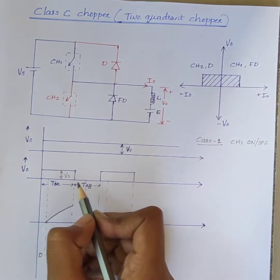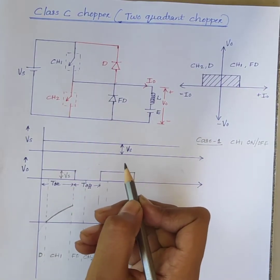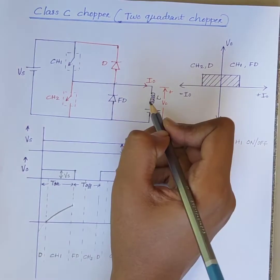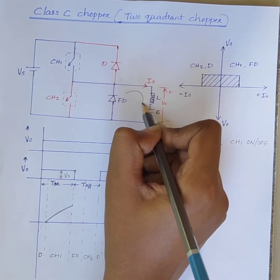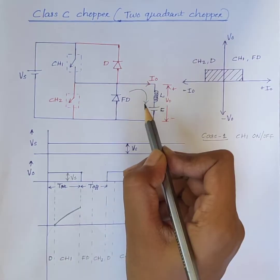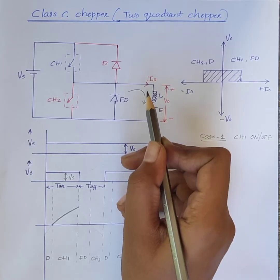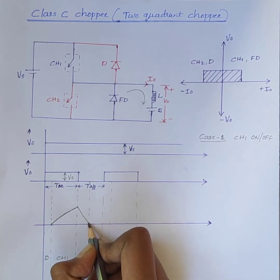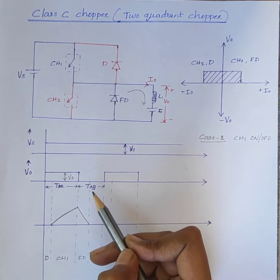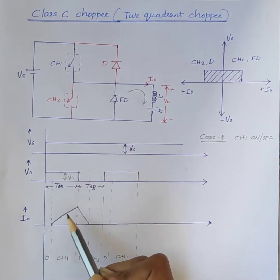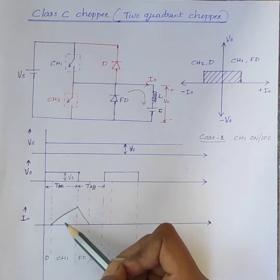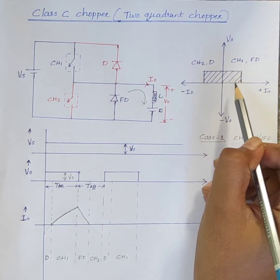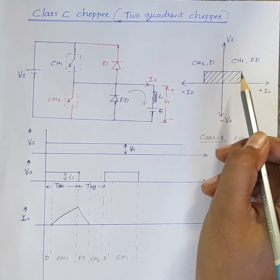When CH1 is off, the freewheeling diode FD comes into the circuit as it gets forward biased by the voltage induced in the inductor L, and it acts as a short circuit. Therefore, the output voltage V0 is equal to 0. However, the output current I0 continues to flow through the freewheeling diode and inductor in the same direction. Therefore, the energy stored in the inductor is released and I0 decreases gradually. From Case 1, it is clear that V0 and I0 are positive, and hence the operation is in the first quadrant — this is the Class A mode of operation.